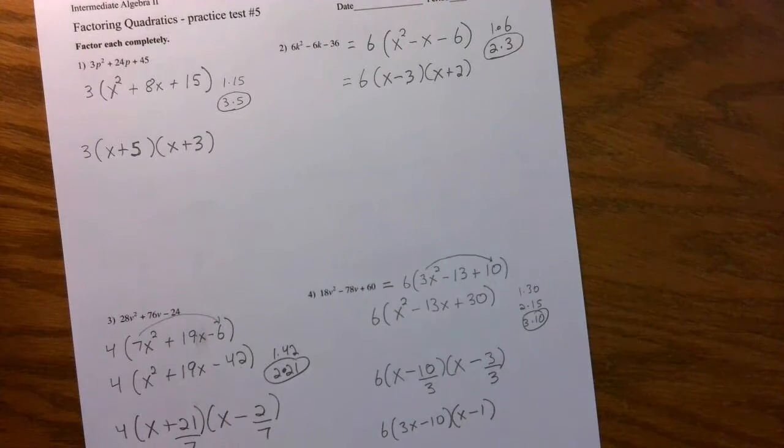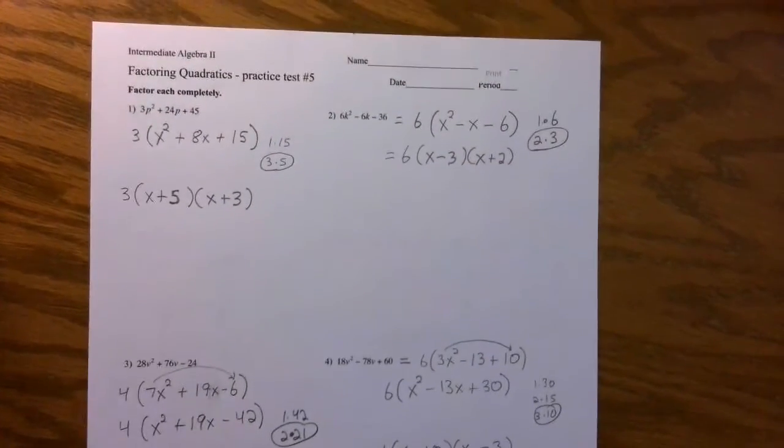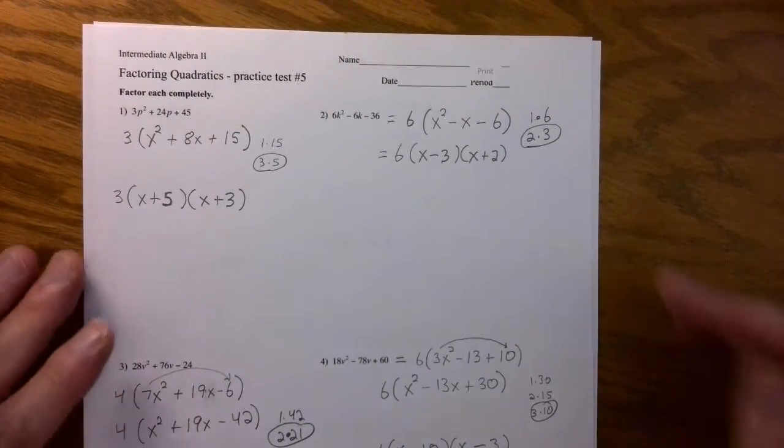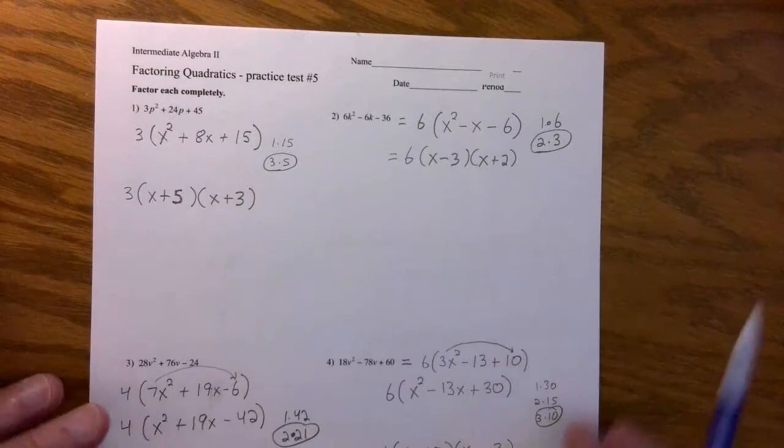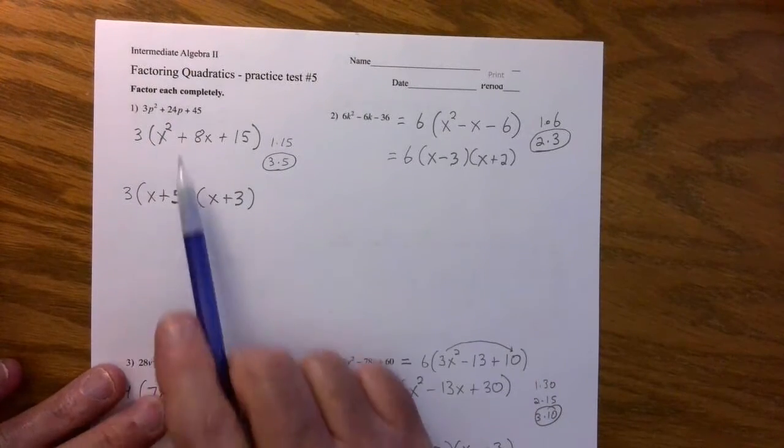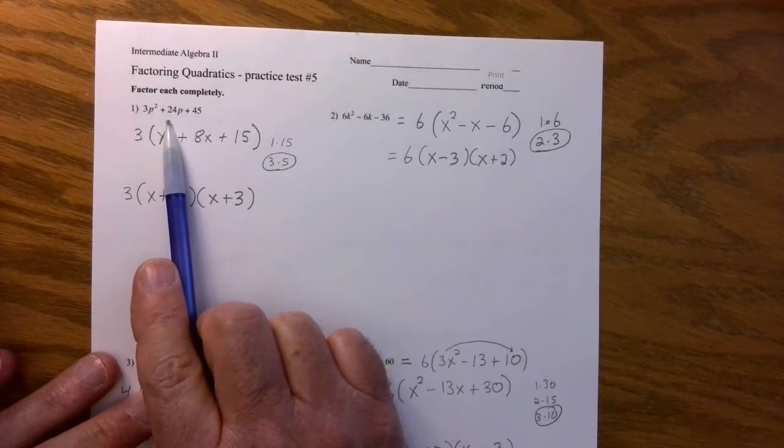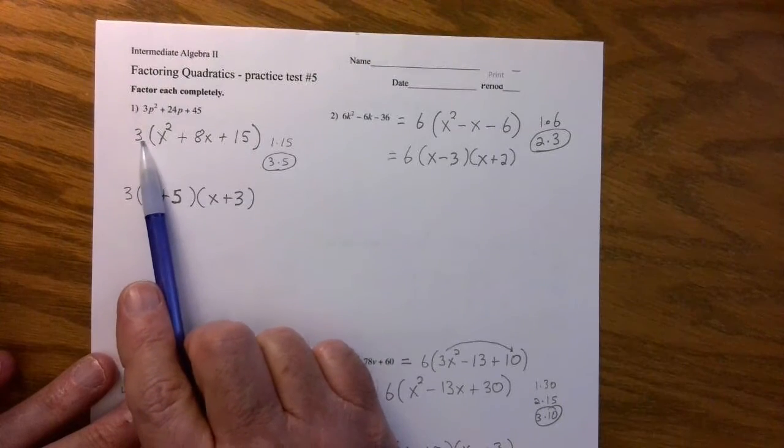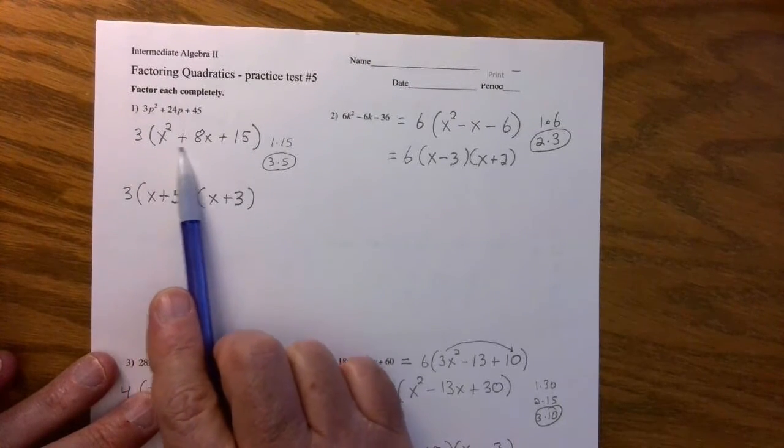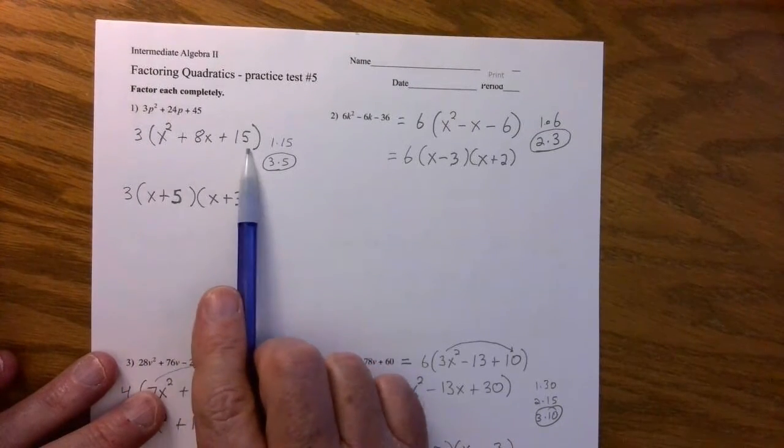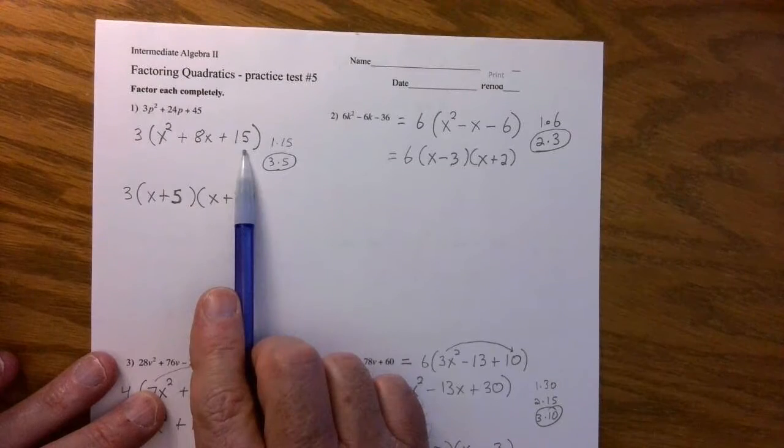So these are practice problems, guys. This is not what the test is, but it looks kind of like the test. There's a worksheet if you want to print it, but I did the whole thing here. Let's just look at it. The first one is the greatest common factor. It's a three. Just take it out. And once you take it out, this is what the quadratic looks like.